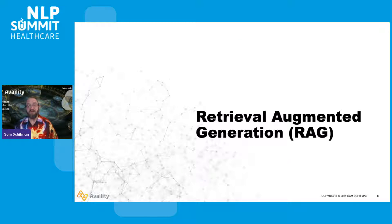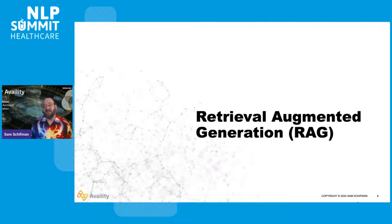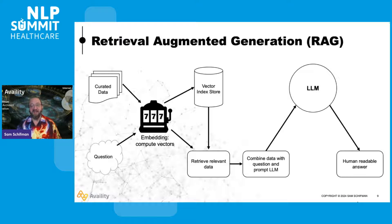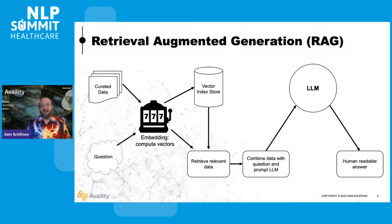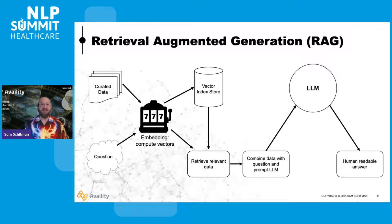This is where retrieval augmented generation, or RAG, comes in. RAG is a process where we take some curated data, put it in what we call a vector store, and then we're able to associate that with questions. We're going to step through this and understand how it works today.